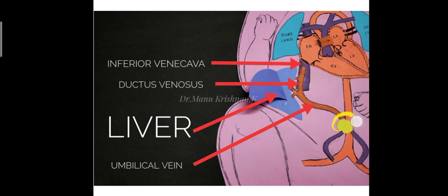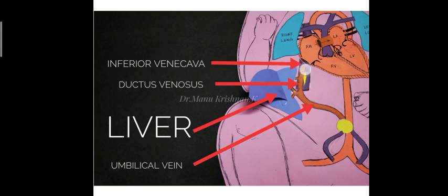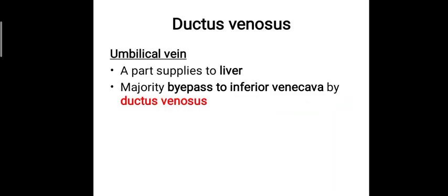After reaching the fetus, the umbilical vein continues upward, giving off a part to the liver. However, most of the oxygenated blood coming through the umbilical vein bypasses the liver and is directly connected to the inferior vena cava through a bypass called the ductus venosus. So the ductus venosus bypasses most of the blood from the umbilical vein directly into the inferior vena cava.